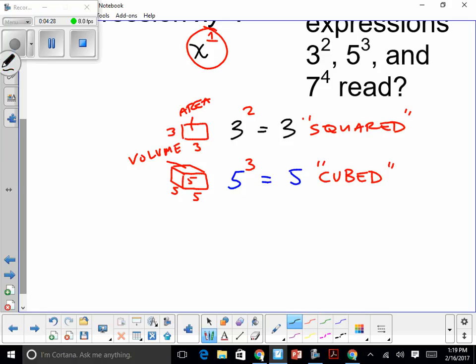And then the last guy in the group, 7 to the 4th power. We would say 7, instead of 7 to the 4th power. There's nothing there. Once they do the 2 and the 3, to my knowledge there's no special name for 7 to the 4th power, so we'll just put it 7 to the 4th power.